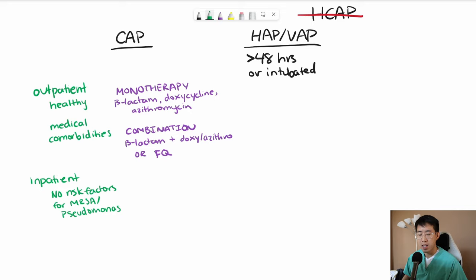And this typically revolves around whether they've had a prior history of MRSA, pseudomonas, if they've had recent antibiotics, any structural lung disease or IV drug use or things like that.